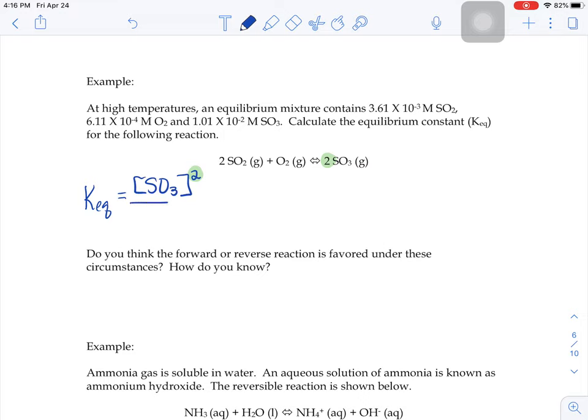That's going to go over our SO2, which is also going to be squared because of this 2, times our oxygen, which just has an imaginary 1 here, so no exponent in our equilibrium expression. Now we just need to plug in the numbers that they told us.